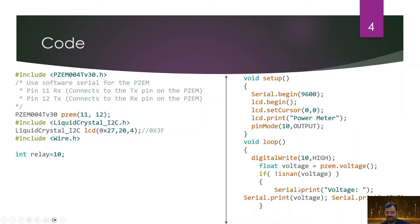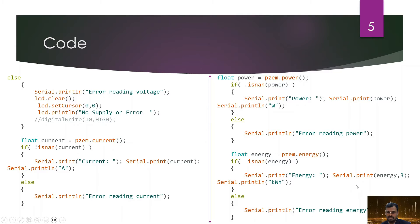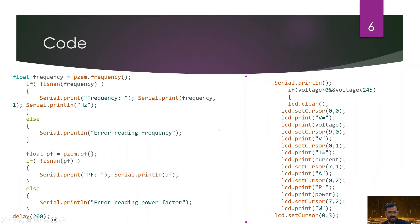We start measurement of electrical quantities using PZEM004T. The pzem.voltage() function brings the voltage reading from the device to the Arduino. If available, it prints the value; if not, it displays 'no supply or error' — the message you get when no supply is connected. Similarly, we take current, power, and energy values, then print every quantity to the serial monitor, including frequency and power factor.